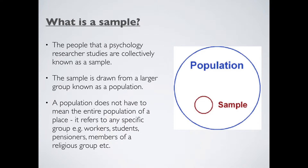Sampling means that we select people to take part in our research. There are two logical steps behind this. First, we define the target population we want to study. For example, if we live in Dundee and want to do a survey on elderly people, unless that target population is very small, we probably can't study all elderly people in Dundee. So we pick a smaller group from that population — the sample — and we conduct the research on them.